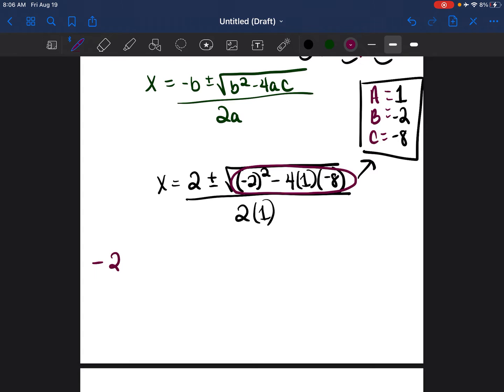So negative 2 squared minus 4 times 1 times negative 8. So negative 2 squared is negative 2 times negative 2, which is 4. Then do this by itself. 4 times 1 is 4, and then 4 times negative 8 is negative 32. 4 minus negative 32. When you have a minus sign and a negative side by side, it becomes an addition problem. 4 plus 32, and so 36 should be written underneath the square root.